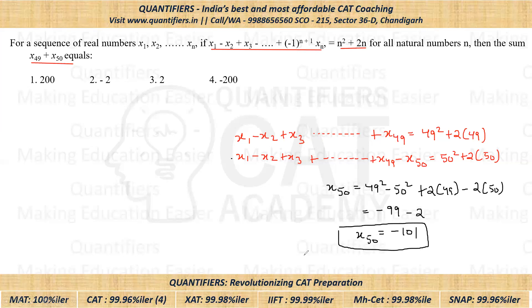So this will give value of x₅₀. Now I have to calculate x₄₉. So we'll do n is equal to 48. So if I put n is equal to 48, so I'll get x₁ minus x₂ plus x₃ and so on. Now last term here would be negative of x₄₈, which will be equal to 48 square plus 2 times 48.